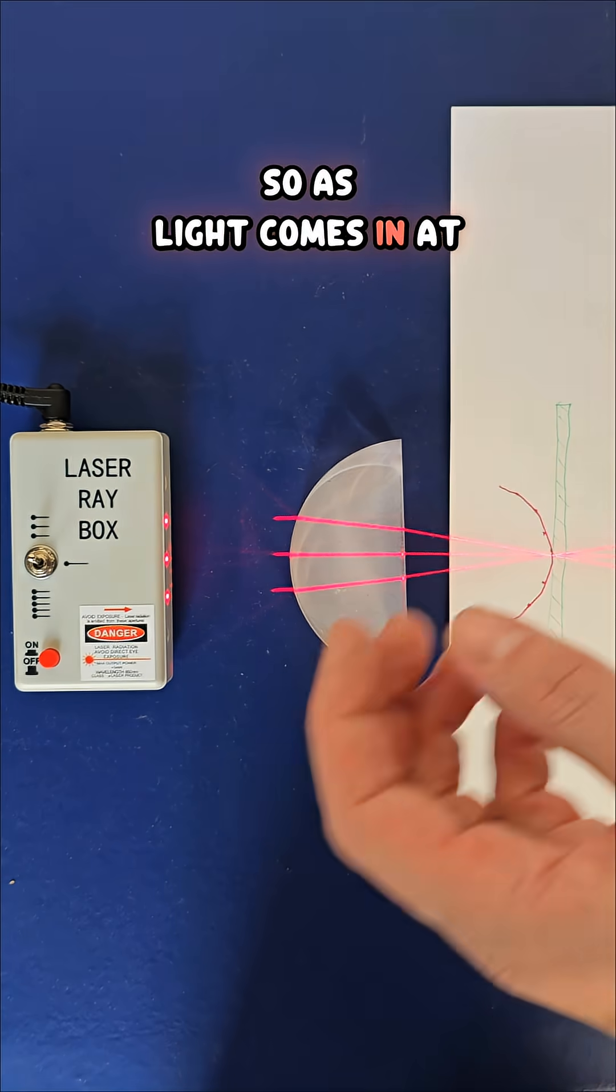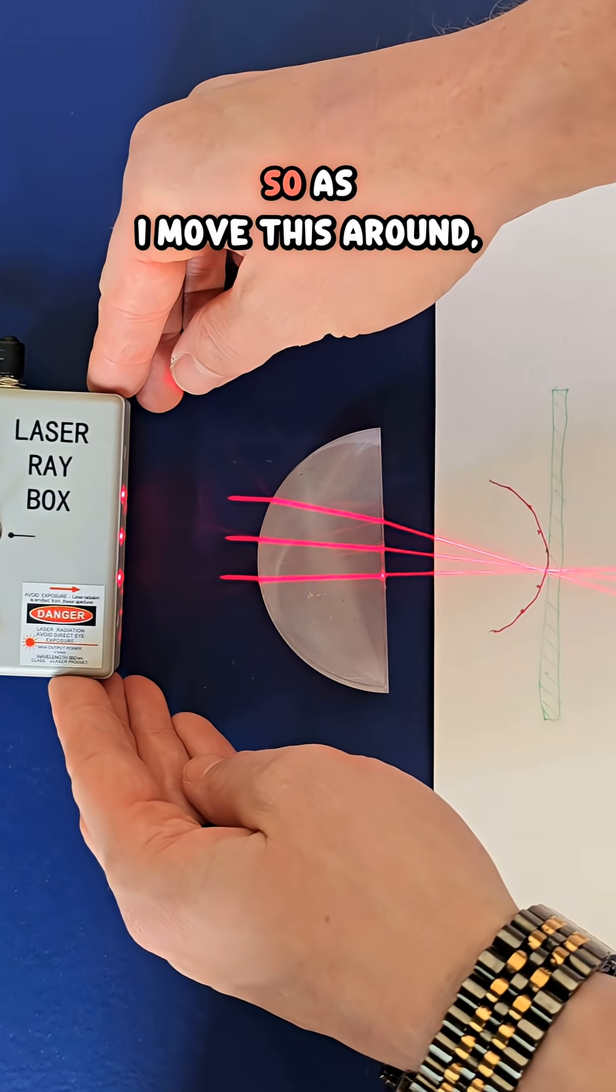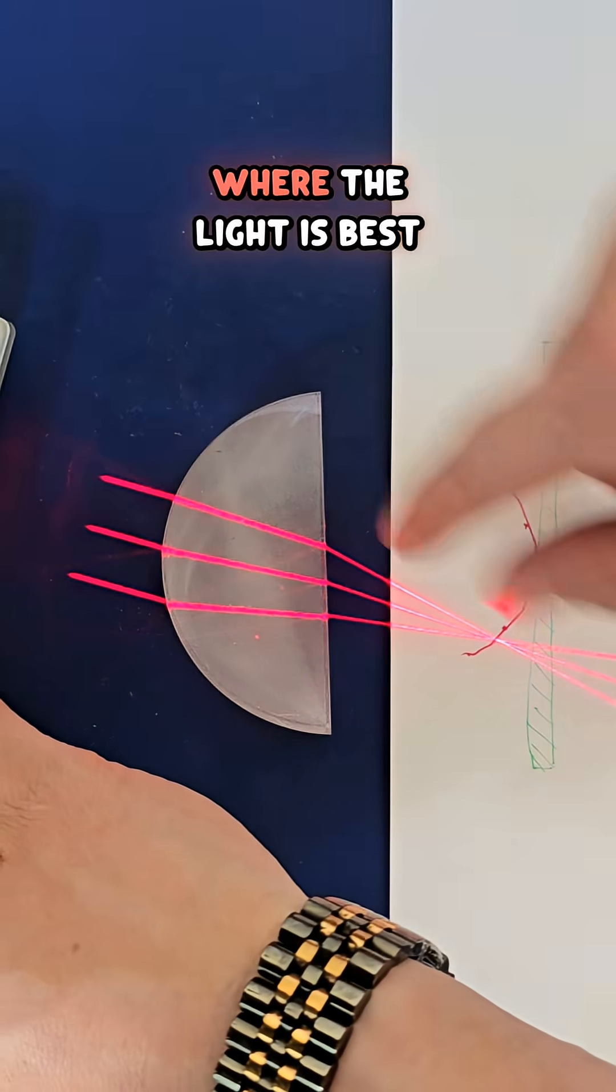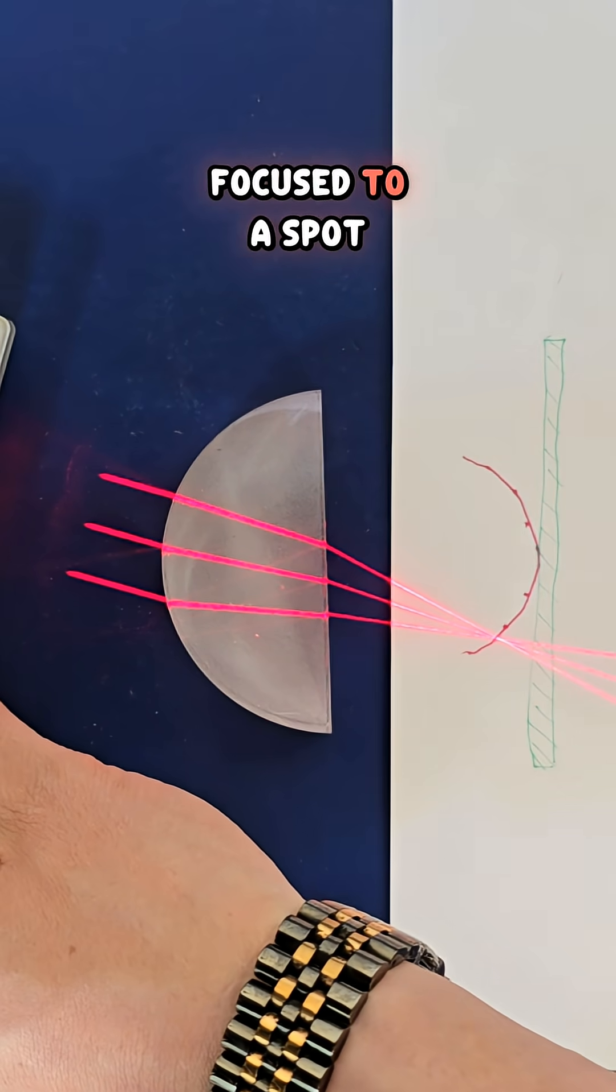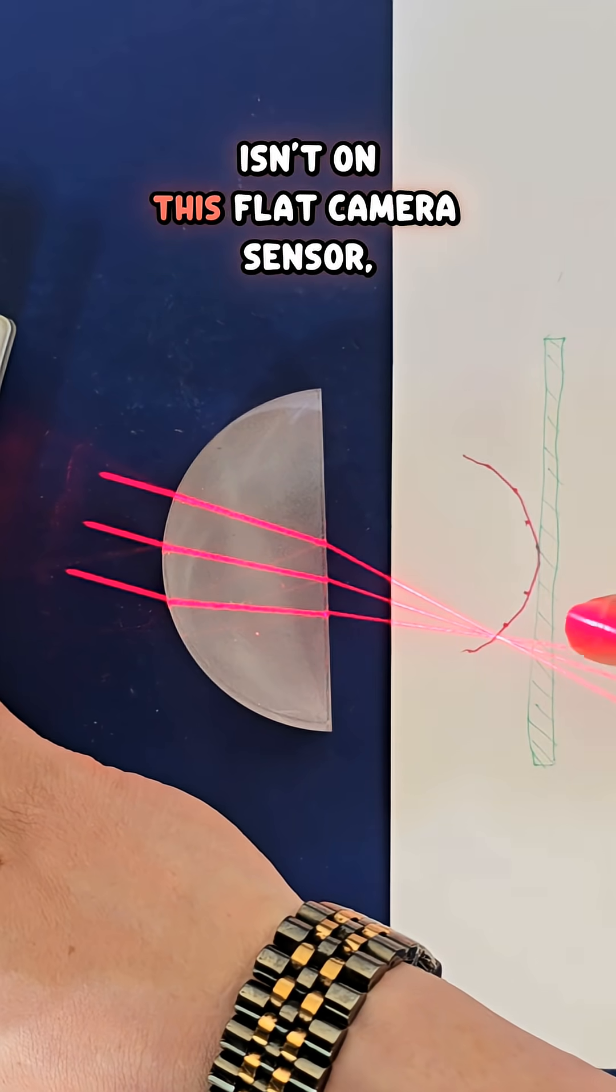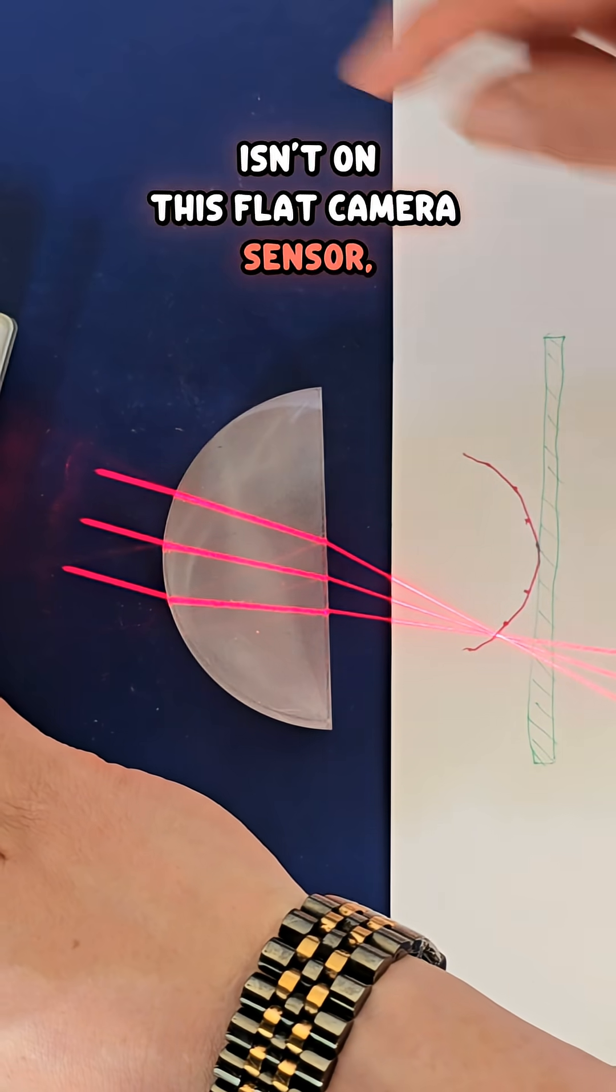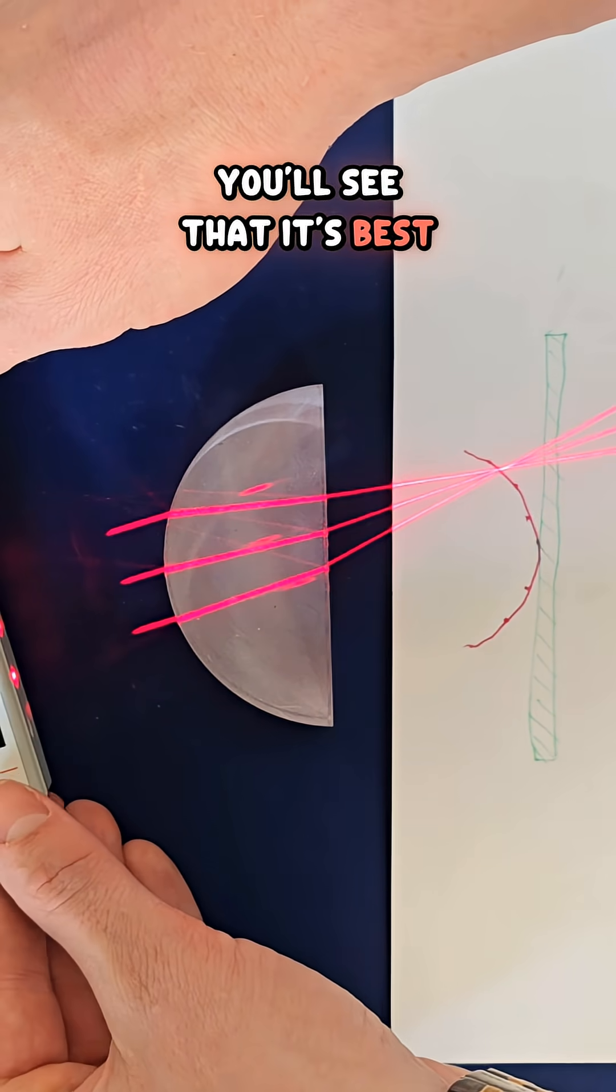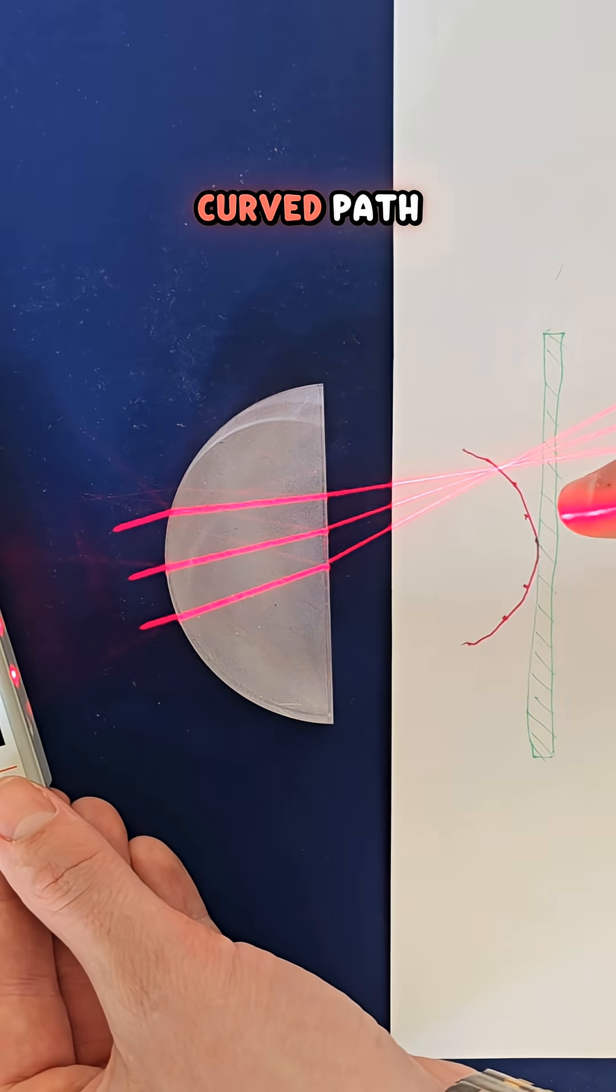So as light comes in at different angles, as I move this around, you see that the position where the light is best focused to a spot isn't on this flat camera sensor, the thing shown in blue here. At different angles, you'll see that it's best focused along more of a curved path.